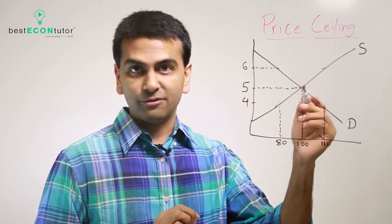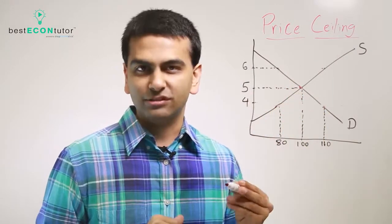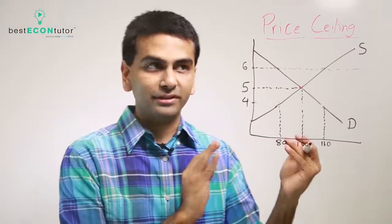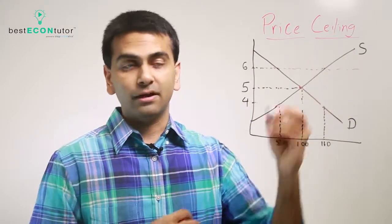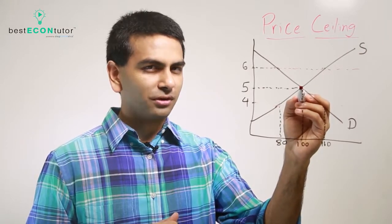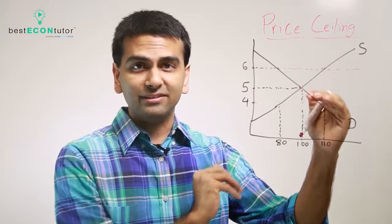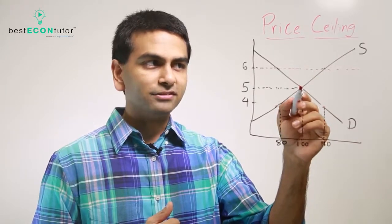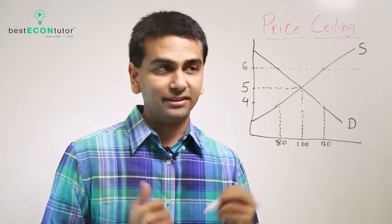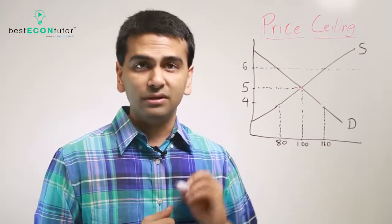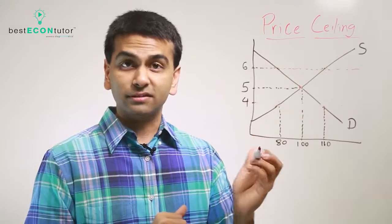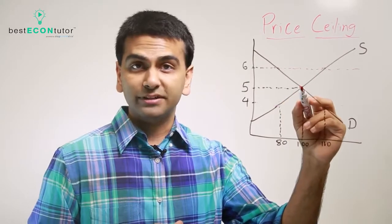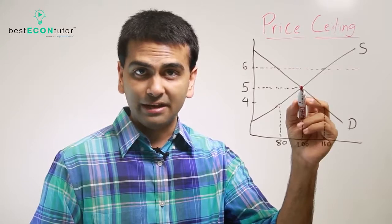What if the government sets a price ceiling of $6? That means $6 is the maximum price you can set. But if our price is currently $5, and the government says you can't set it higher than $6, well $5 isn't higher than $6. So this would be a non-binding price ceiling because it has no effect on the equilibrium at all. The equilibrium stays at 100 quantity, $5 price.